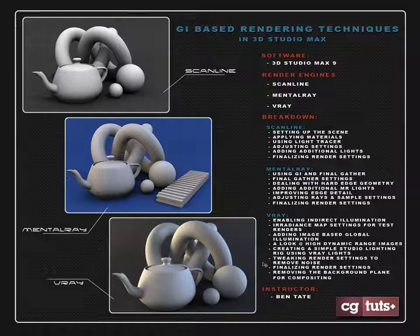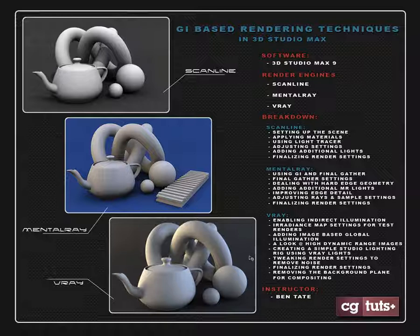Finally, we'll move on to using the V-Ray renderer. V-Ray doesn't ship with Max — you'll have to purchase and install it separately to follow the V-Ray section. We'll look at how to do global illumination inside of V-Ray, some settings for GI bounces, and we'll be using the irradiance map so you can get some quick test renders before rendering out a really high-res version. We'll also look at how to implement an HDRI image for image-based lighting and set up a quick studio lighting rig inside of Max to complement the GI using some V-Ray lights.